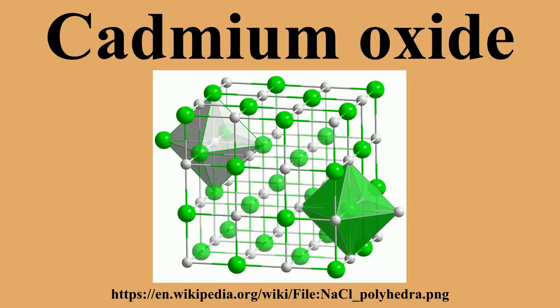Cadmium oxide is an inorganic compound with the formula CdO. It is one of the main precursors to other cadmium compounds. It crystallizes in a cubic rock salt lattice like sodium chloride, with octahedral cation and anion centers. It occurs naturally as the rare mineral montepinite. Cadmium oxide can be found as a colorless amorphous powder or as brown or red crystals. It is an N-type semiconductor with a band gap of 2.18 electron volts at room temperature.